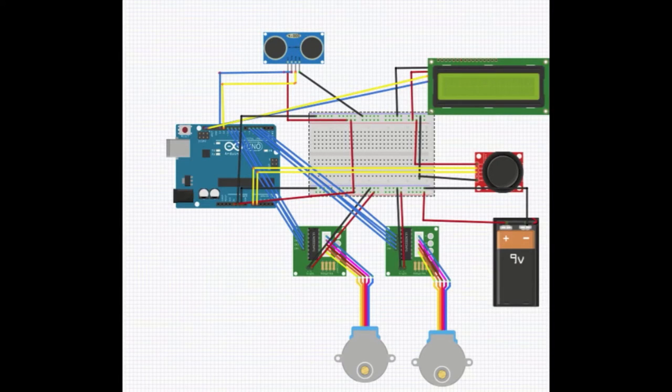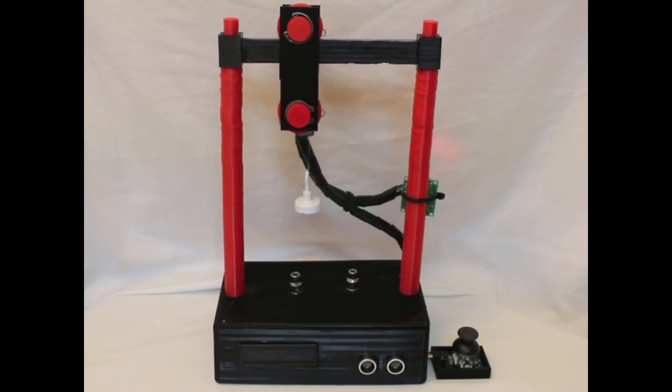Here's the Fritzing diagram of my project for a better visual of how I placed the components. The stepper motors are being powered by the 9-volt battery on a separate power rail, and on another power rail, the rest of the components are being powered through a jumper wire of 5 volts through the Arduino.